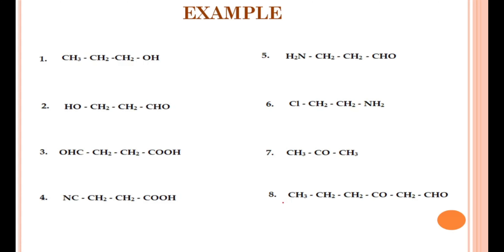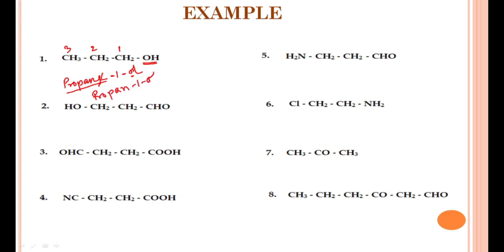Let's practice with examples. First structure: three carbon atoms with OH group at position 1 — root word 'prop-', alkane so '-ane', OH as suffix gives '-ol', two consecutive vowels so remove 'e' — the name is propan-1-ol. Second structure: CHO and OH groups both present; CHO has higher preference. Three carbons — propan-; CHO as suffix gives '-al'; OH as substituent is 'hydroxy-' at position 3. Two vowels, remove 'e' — the name is 3-hydroxypropan-1-al, which can also be written as 3-hydroxypropanal.